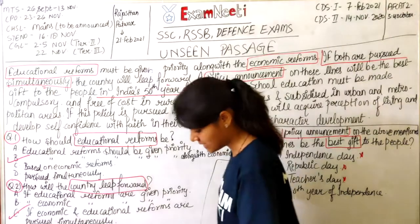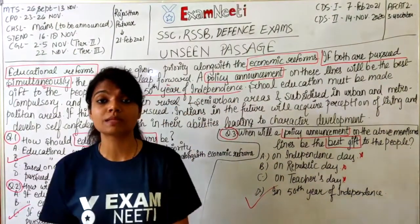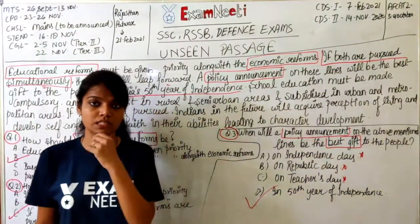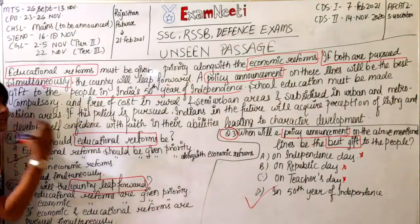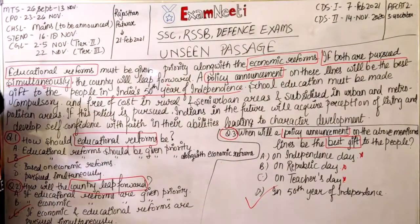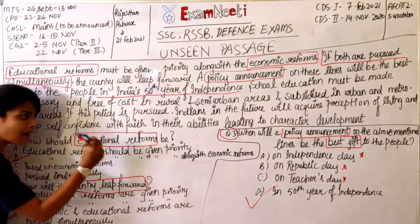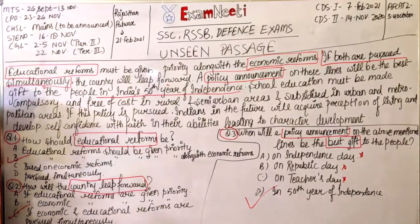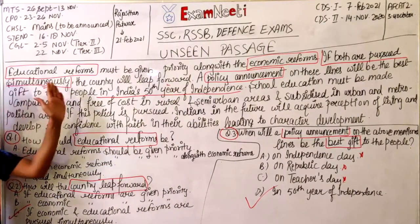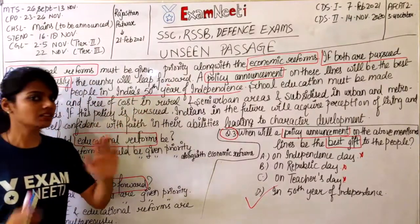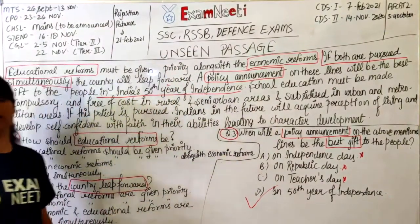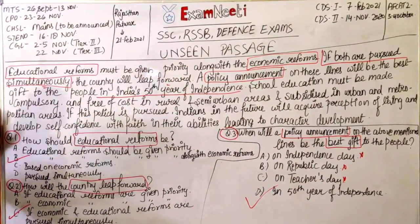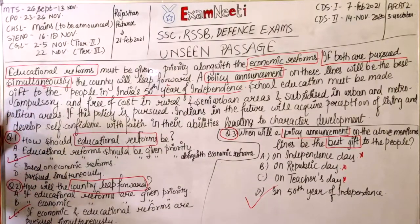So what do you have to understand? Tricks, rules and steps. Number 1: Read the questions first. Number 2: Mark the key words — write the key words. Number 3: Find the key words in the passage. That is it. The rest — you don't need to do anything else. Mark the keywords, that is it.